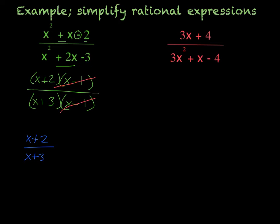However, we're not completely done. We have to find where x cannot be true. So we need to find x cannot equal what and x cannot equal what. To find this, you need to go back up to your factored form and set anything equal to 0, because you cannot have 0 in the denominator.